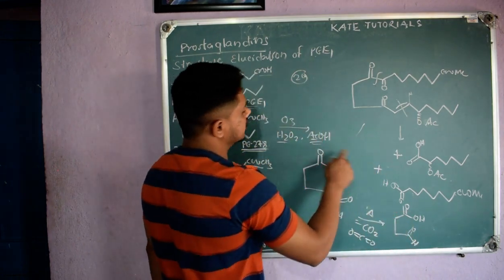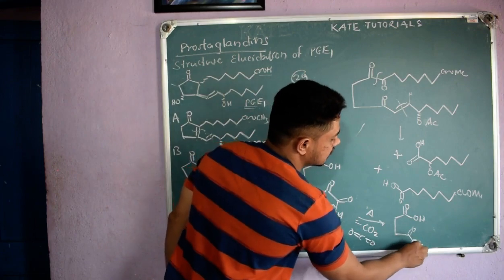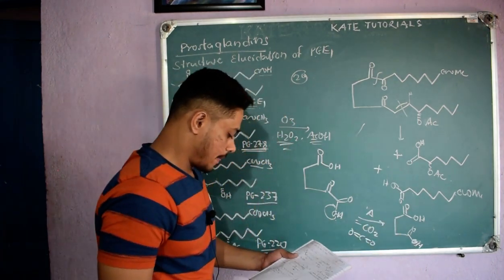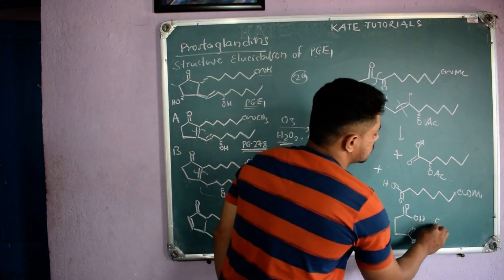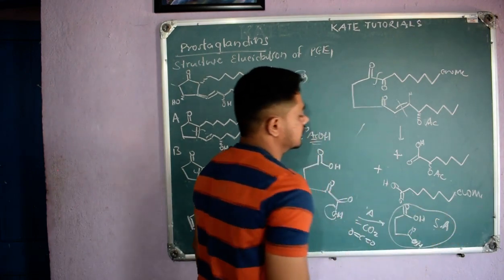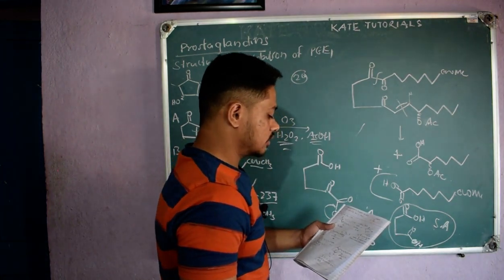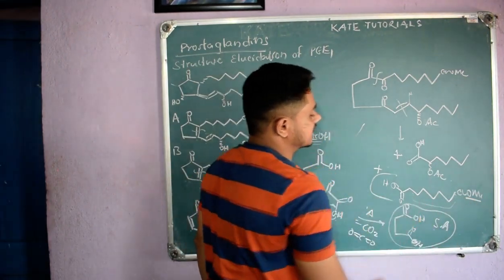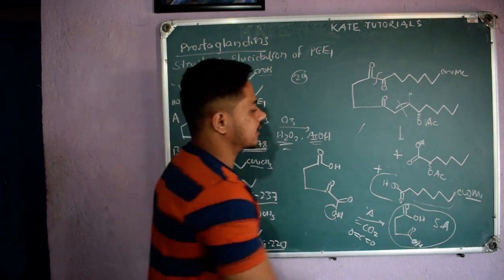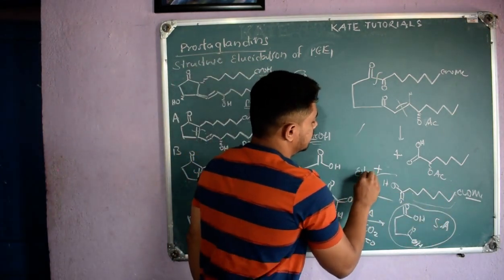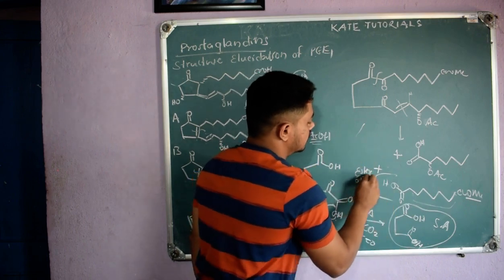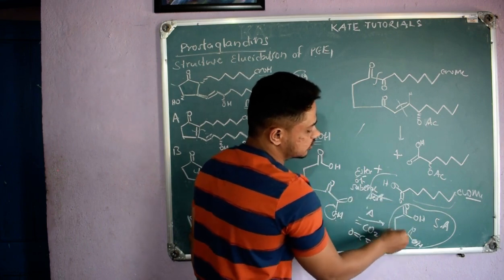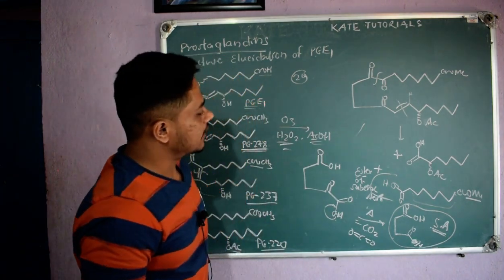Because of the oxidizing agent (H₂O₂), instead of aldehyde we get acid — OH comes from this H₂O₂. What we get is succinic acid (HOOC-CH₂-CH₂-COOH). And the other product is the ester of suberic acid — one of the COOH groups was converted to ester before; so it is the methyl ester of suberic acid.